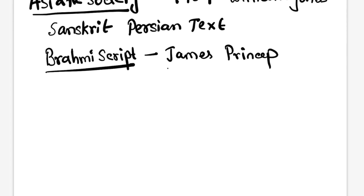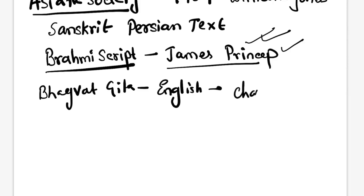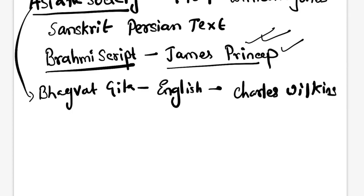By James Prinsep's name there is a Ganga Ghat located in Calcutta — that is Prinsep Ghat. There was also an English translation of the Bhagavad Gita done by Charles Wilkins, who was also associated with the Asiatic Society. After this, the work was given to the Archaeological Survey of India by Alexander Cunningham.